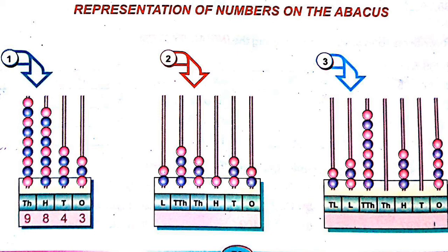You see the first question figure. In the ones column there are three balls — that means in ones place, three. In tens place there are four balls — tens place number is four. In hundreds place there are eight balls — hundreds place is eight. In thousands place there are nine balls — thousands place is nine. So the number is 9843.